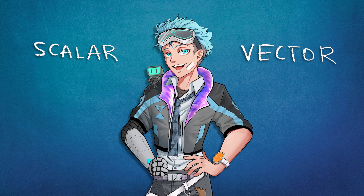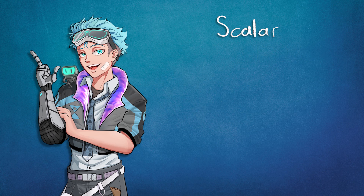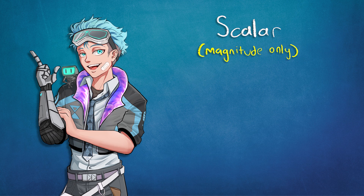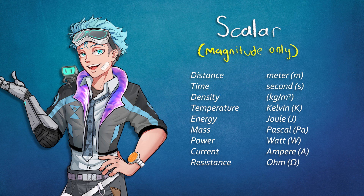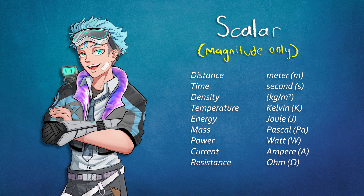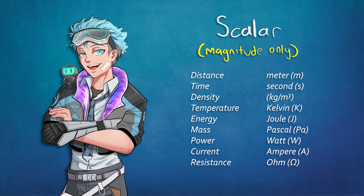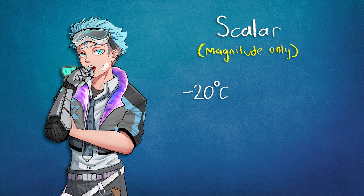Let's take a moment to talk about scalars and vectors. Scalars are fully described by magnitude alone. These include quantities like distance, time, density, temperature, energy, and more. No matter which direction you're facing, their quantity would remain the same. But why do people still use negative signs with them, like minus 20 degrees Celsius or minus 5 seconds?